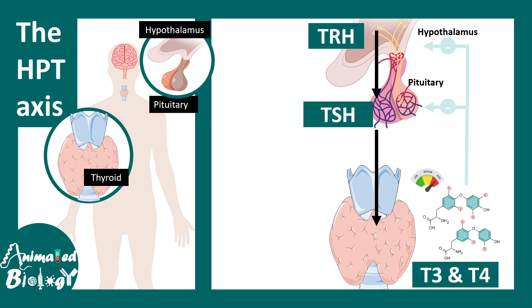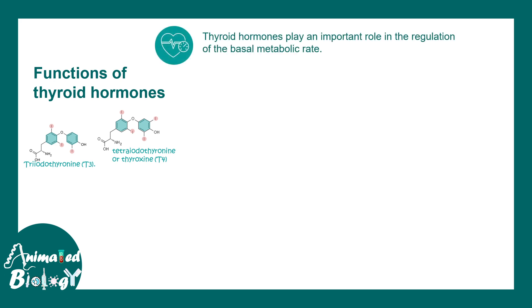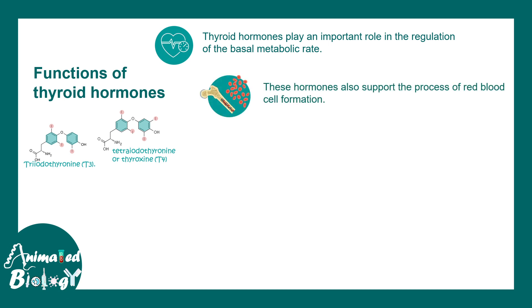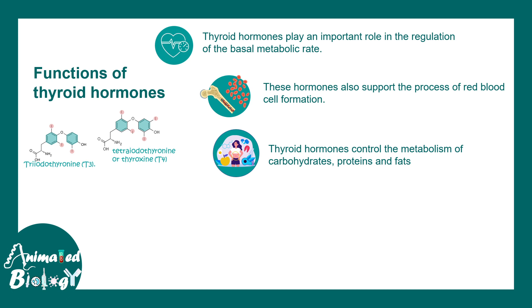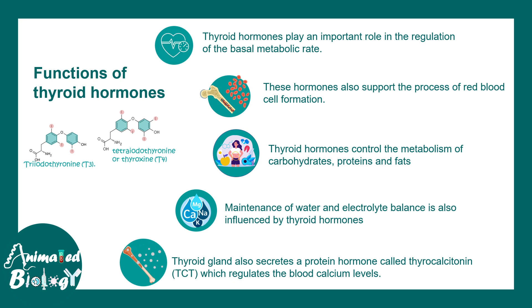Let us try to understand why this negative feedback and modulation is important. Thyroid gland and thyroid hormones are implicated in several biological processes. They regulate metabolism and blood cell production. Thyroid controls the metabolism of protein, carbohydrate, and fats — almost all aspects of metabolism are modulated by thyroid hormones. Electrolyte balance and electrolyte absorption is also modulated by thyroid hormones.